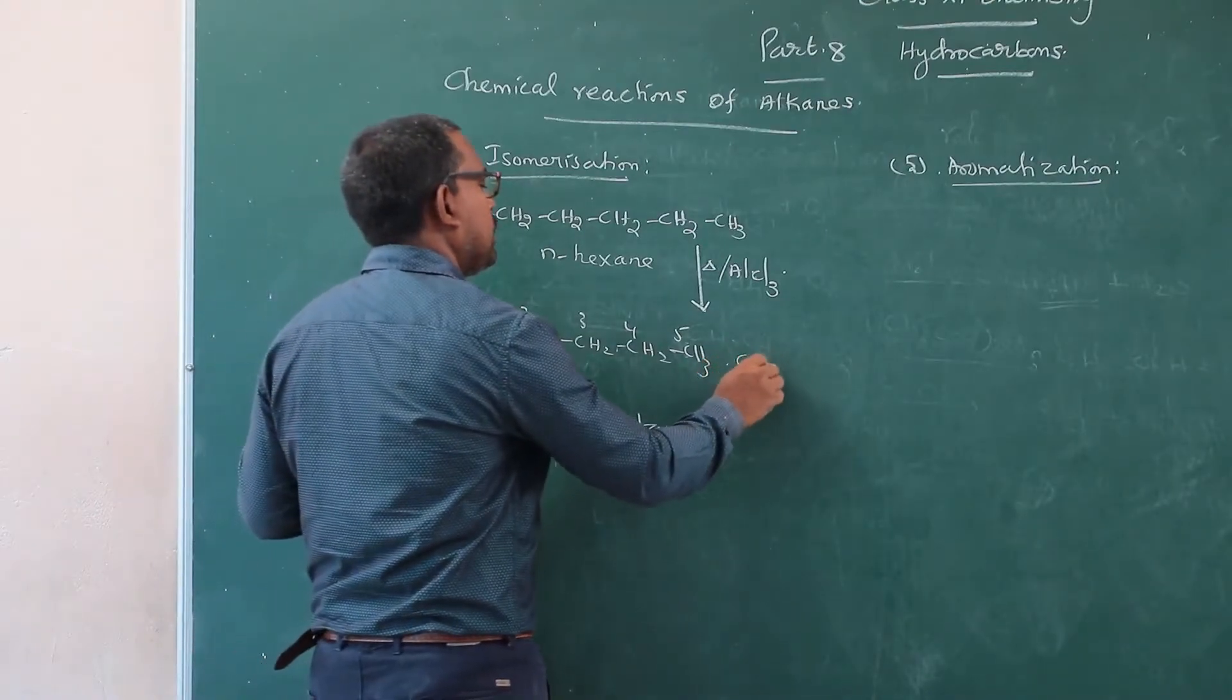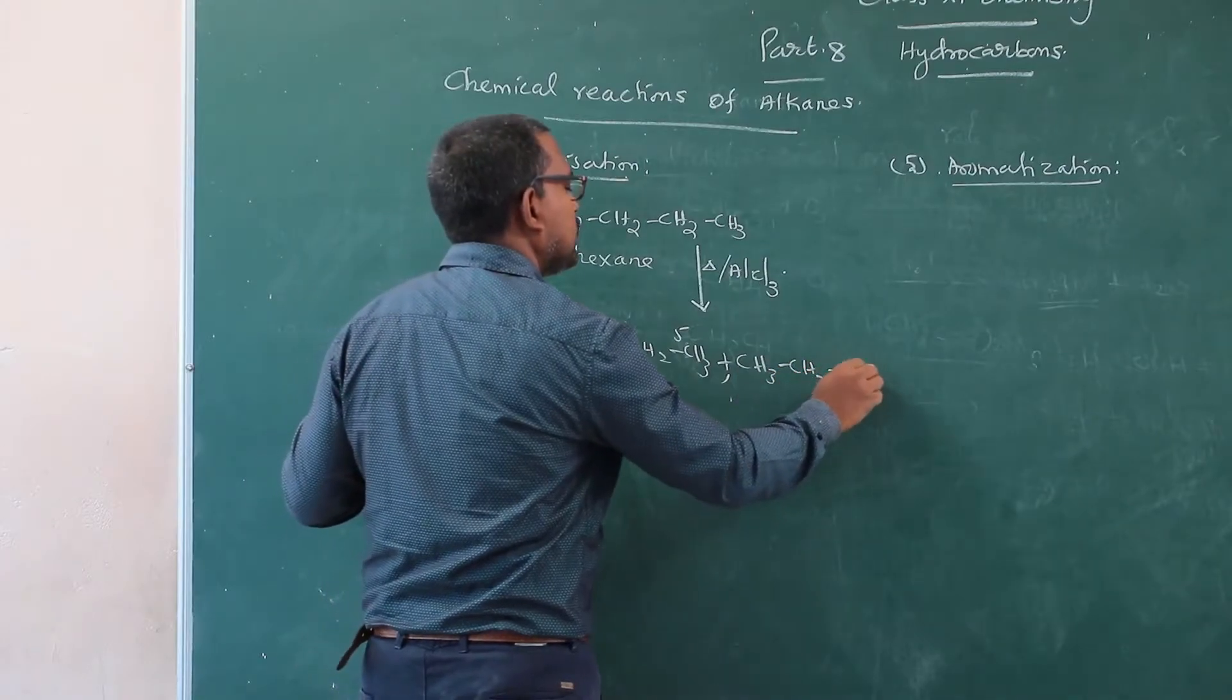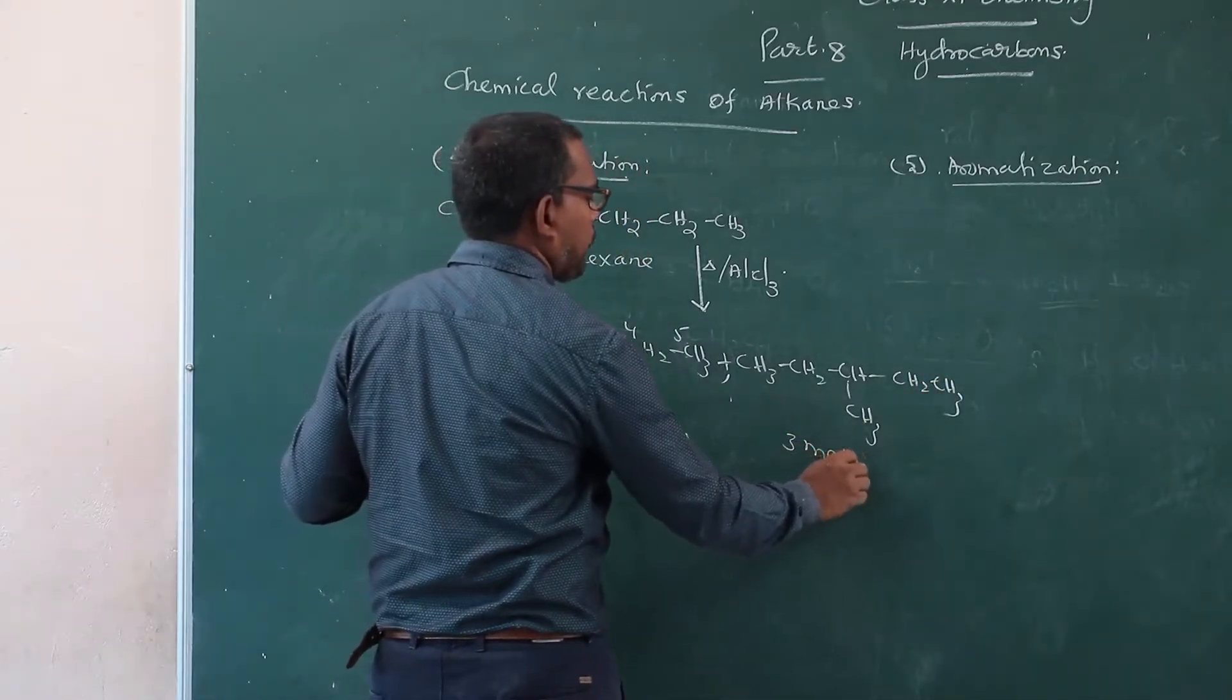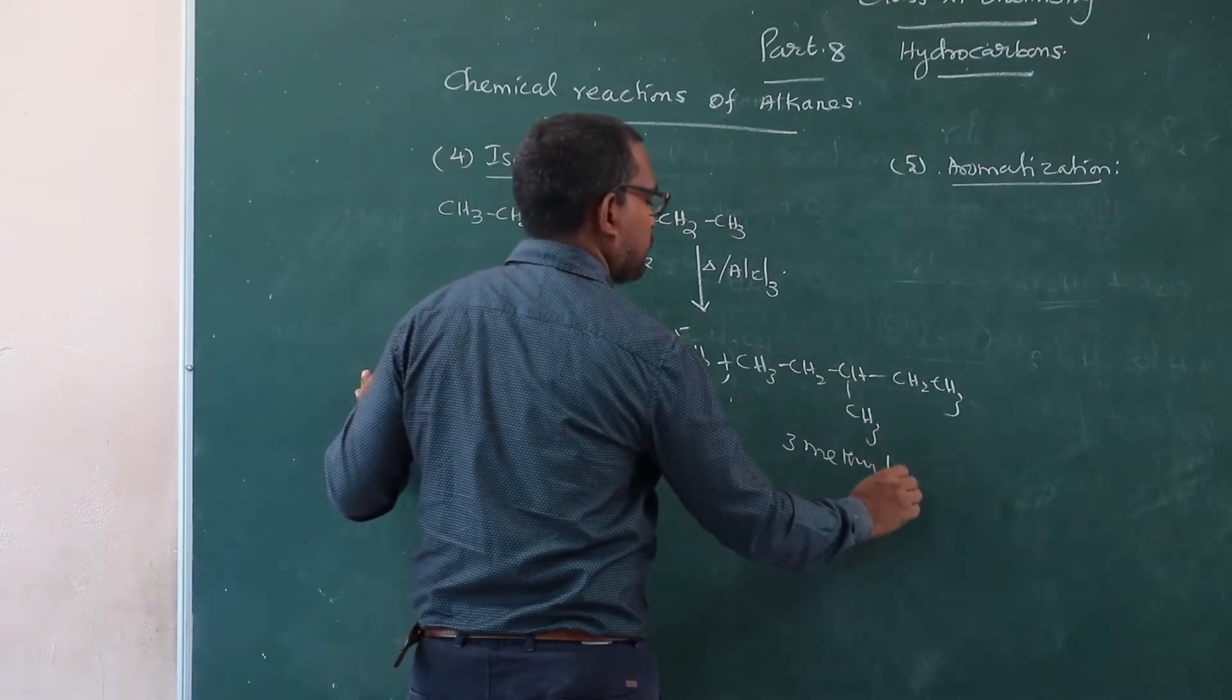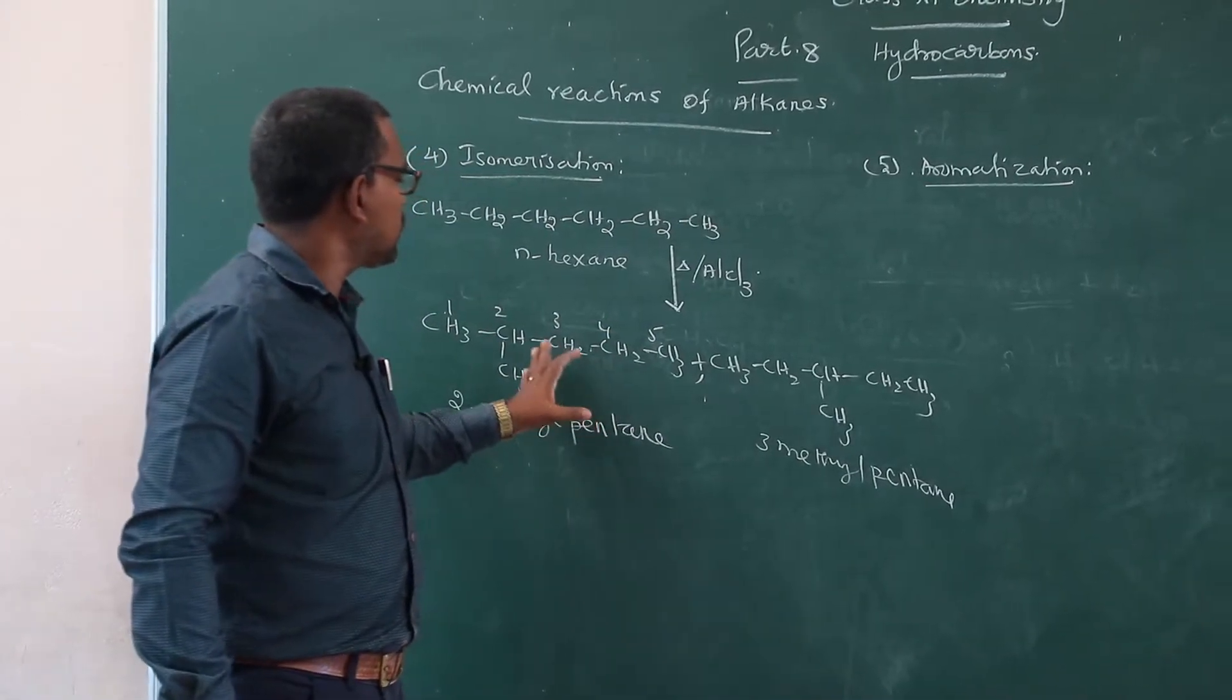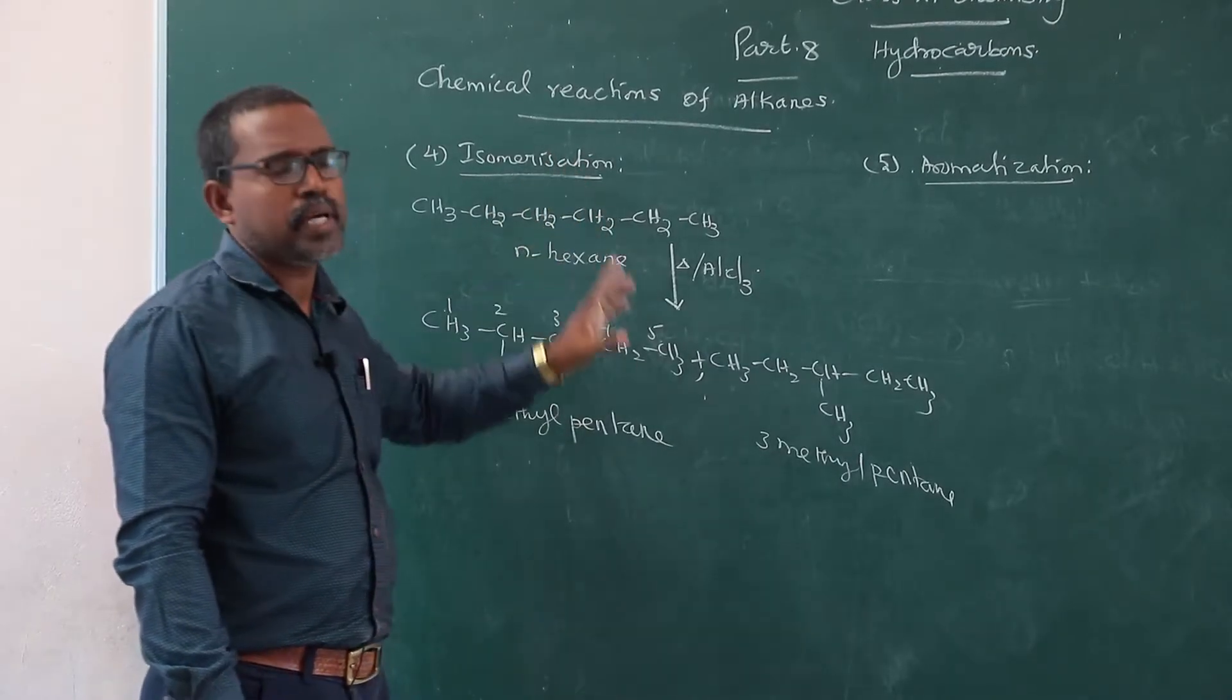Similarly, CH3-CH2-CH(CH3)-CH2-CH3. That is 3-methyl pentane. 3-methyl pentane and some other products are also formed and these are the isomers.